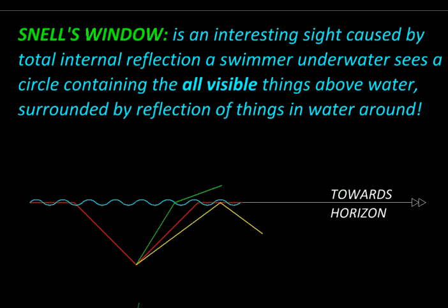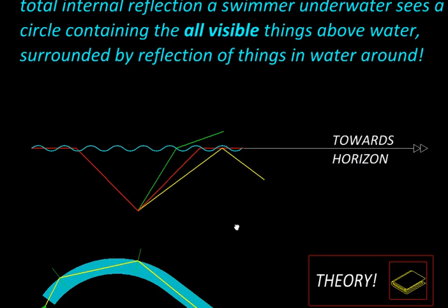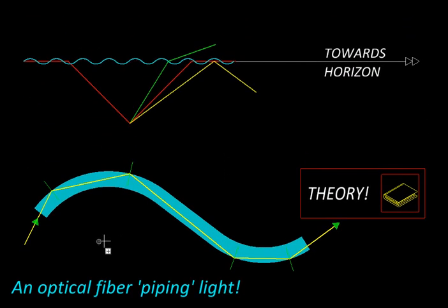Of course we can do better things with total internal reflection than just watch fish swim upside down. We can use it for piping light in optical fibers — light gets trapped within them because of total internal reflection and can be taken wherever needed. It also gives diamonds their shine: light gets trapped inside because of total internal reflection and then comes out at interesting angles through the facets. Finally, it also gives us an extra rainbow — total internal reflection within the raindrops causes an additional rainbow above the one that we see in the sky.